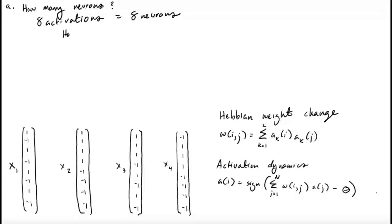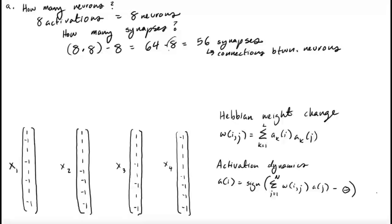Then the second question is, how many synapses are there? To calculate this, we simply multiply the number of neurons in the network times itself, and then subtract the number of neurons. So that's 64 minus 8, which leaves us with 56 synapses, which are connections between neurons. Why do we subtract that 8? Because a neuron cannot connect back upon itself.